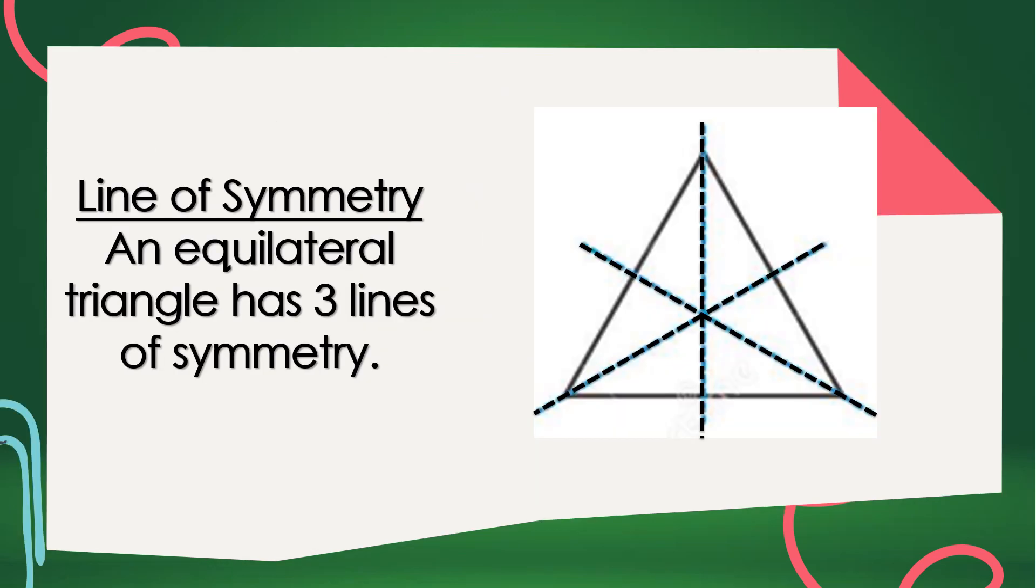An equilateral triangle has three lines of symmetry. One, two, and then three. Again, an equilateral triangle has three lines of symmetry. Do not forget that.